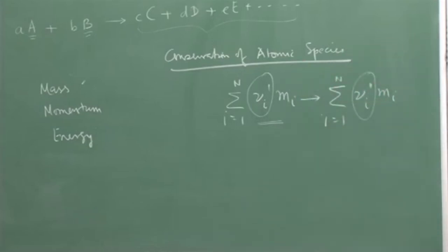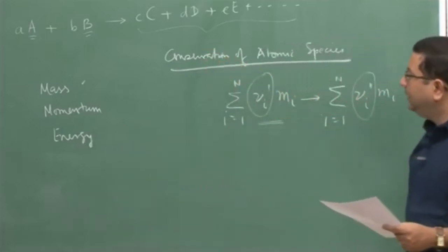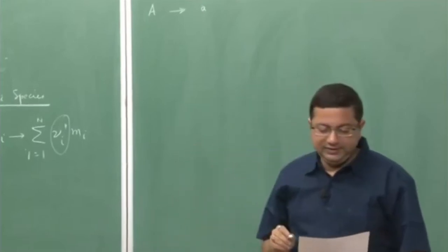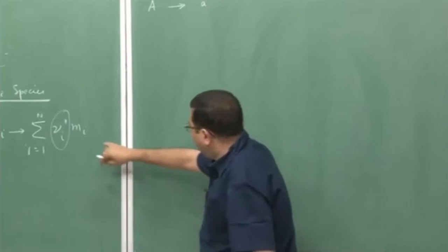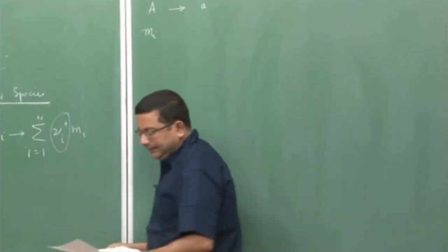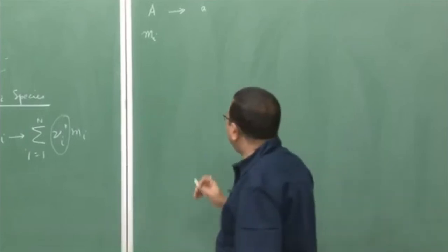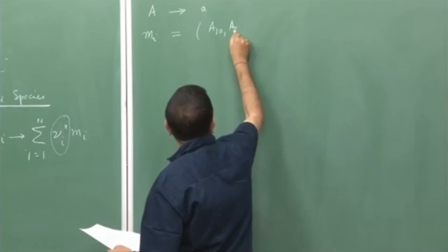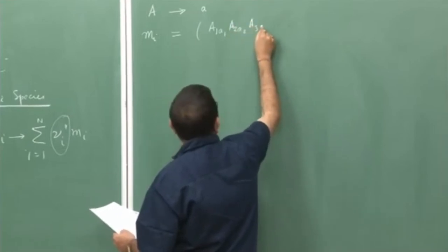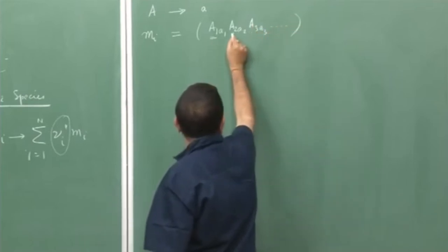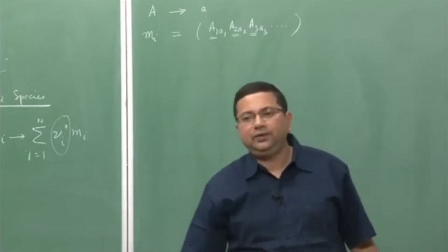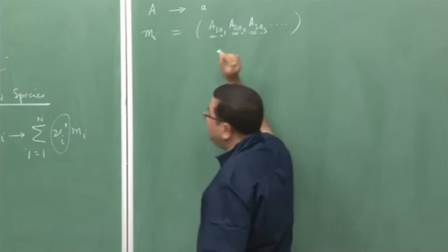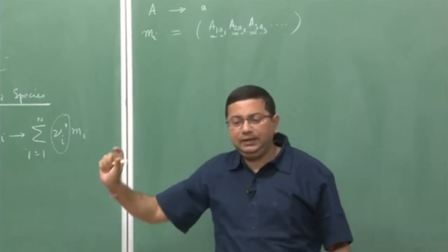For each atomic species A, we define small a as the number of that particular atomic species present in a particular molecular species M-i. So M-i is my molecular species, which consists of various atomic species. I can write M-i as made up of atomic species a1, a2, a3, and so on, where a1, a2, a3 represent atomic species such as hydrogen, oxygen, or carbon. The values small a1, small a2, small a3 represent the number of atoms of those species present in the molecule.